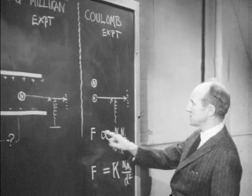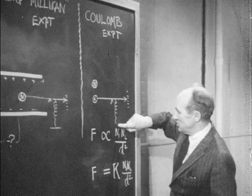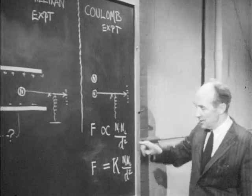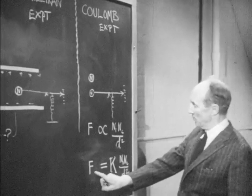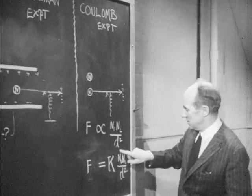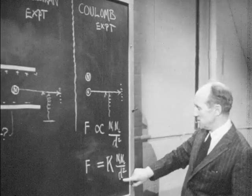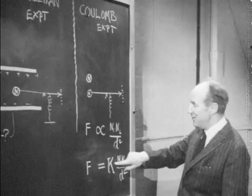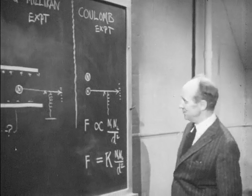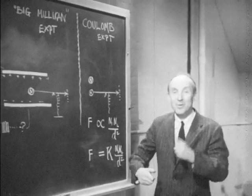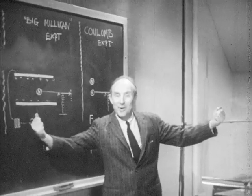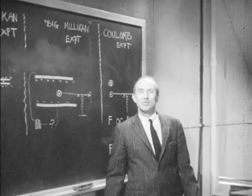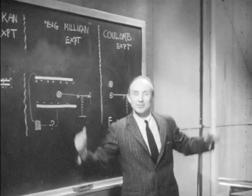Coulomb's law says force is proportional to the number of elementary charges in excess of neutrality times the number of elementary charges over distance squared. We can put it in the form: force equals constant K times number of elementary charges times number of elementary charges over distance squared. If we measure the force, we can calculate K, and then we can find out the force between any number of charges — even between one electron and one electron a metre apart — and compare that with the miserable gravitational attraction between them.